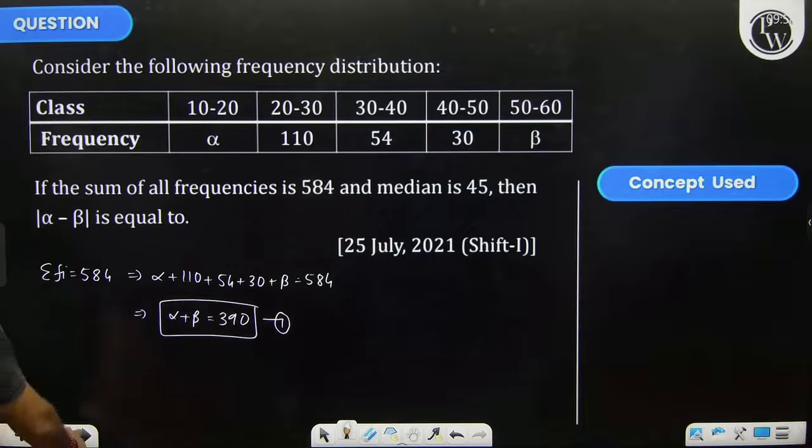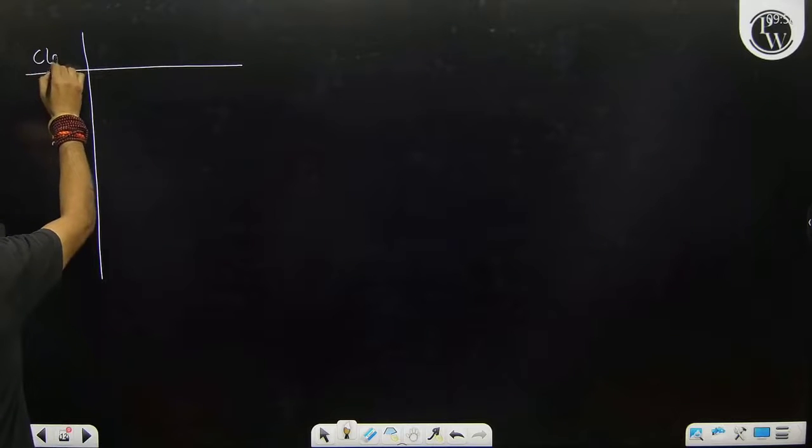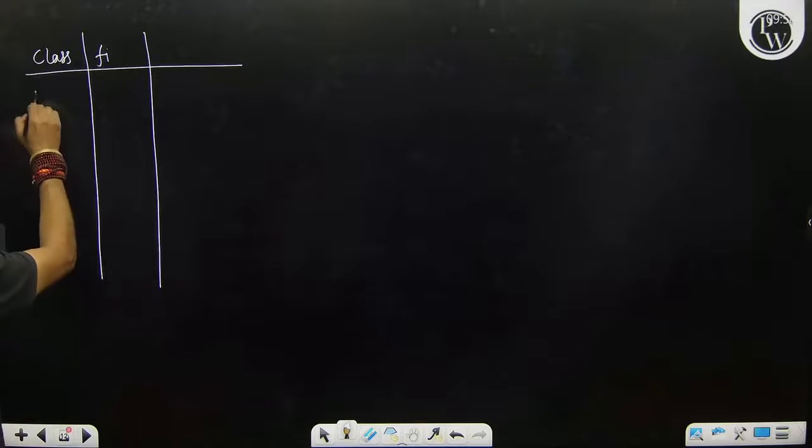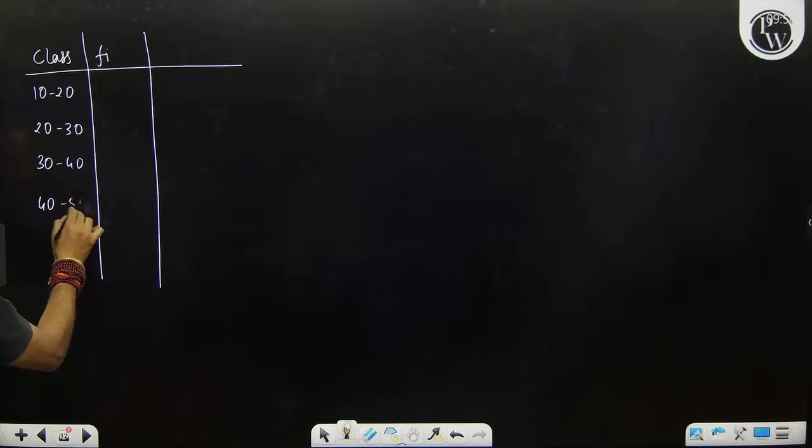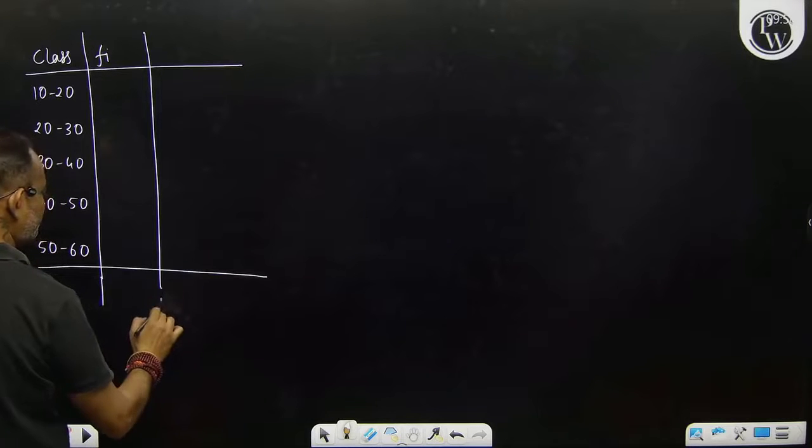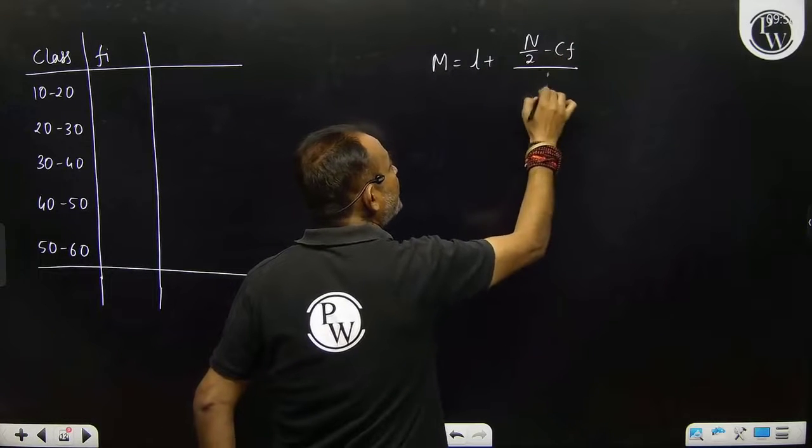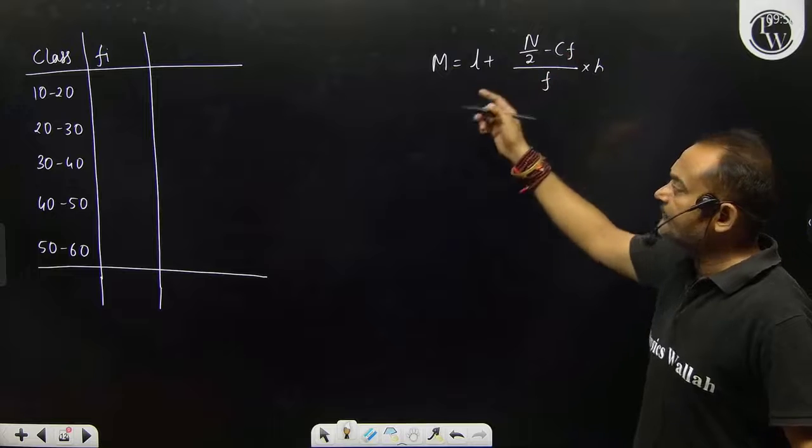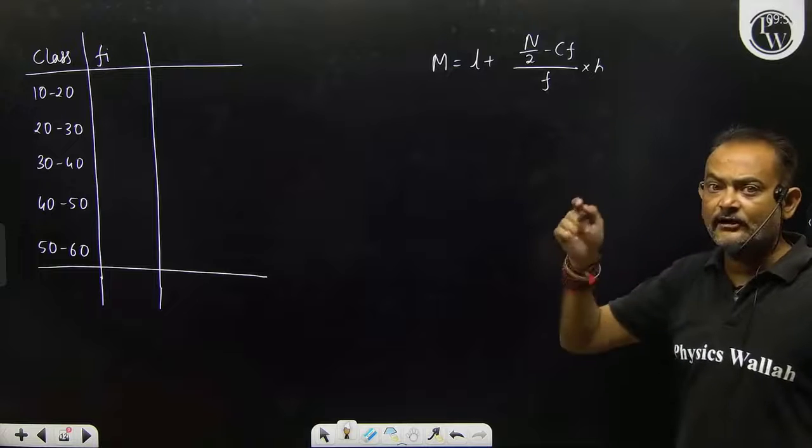Now the median is given. In this case, formula for median is L plus N by 2 minus CF divided by F into H, where L is lower limit of median class, N means sigma fi, CF means cumulative frequency of the class preceding median class, F is frequency of median class, and H is class width.